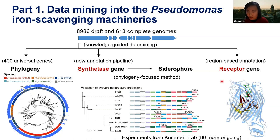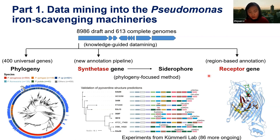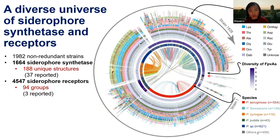For the receptors, we also found new ways of annotating siderophore receptors, which is much more accurate than previous methods. In total, this gave us a hugely diverse universe of the iron-scavenging machinery in Pseudomonas.